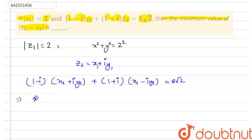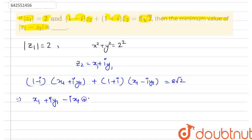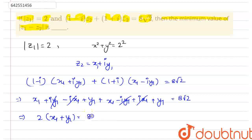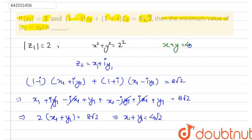Expanding: x1 plus i·y1 minus i·x1 minus i²·y1, and since i² = −1 we get plus y1. Similarly the conjugate term gives x1 minus i·y1 plus i·x1 plus y1. The imaginary terms cancel out, leaving 2(x1 + y1) = 8√2, so x1 + y1 = 4√2. Thus z2 lies on the line x + y = 4√2.